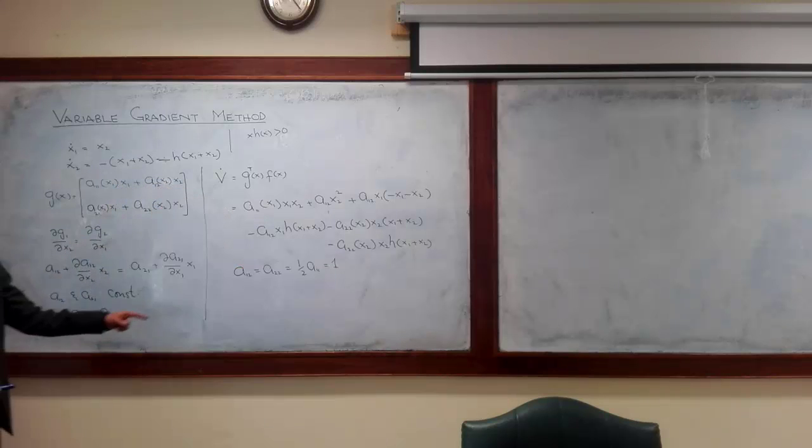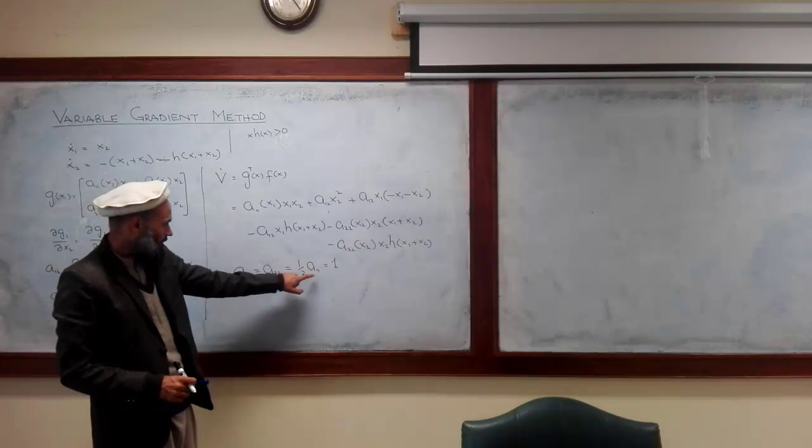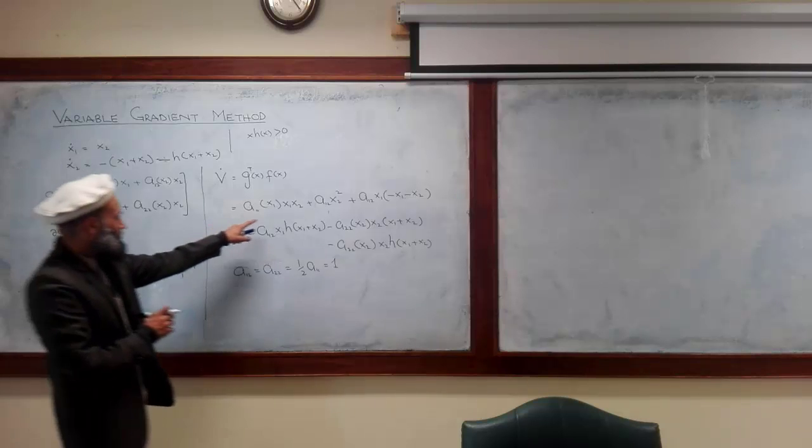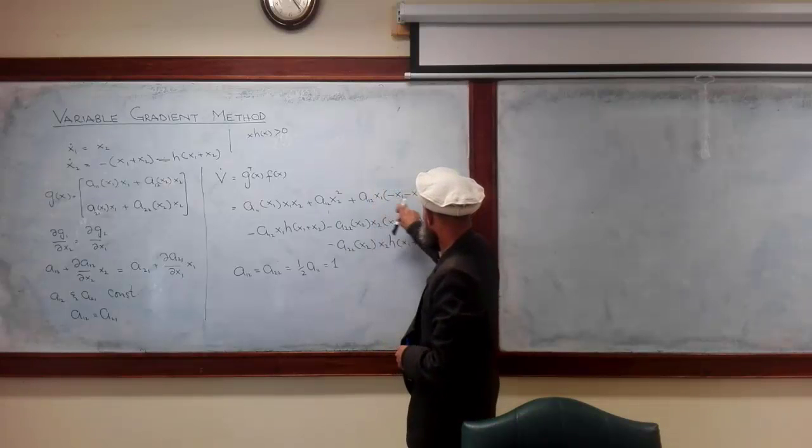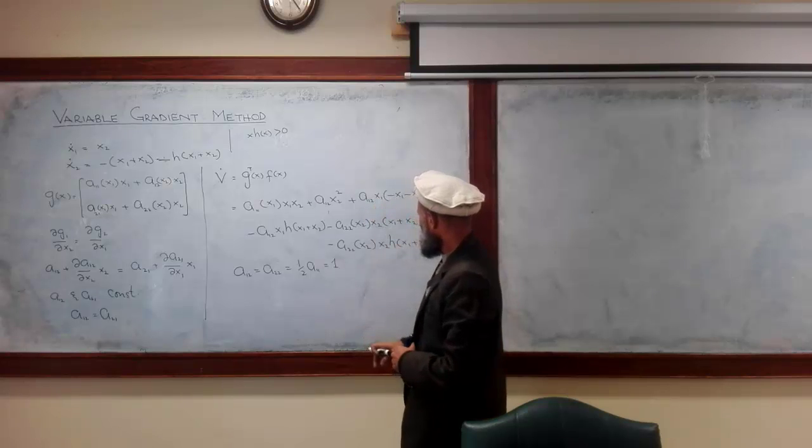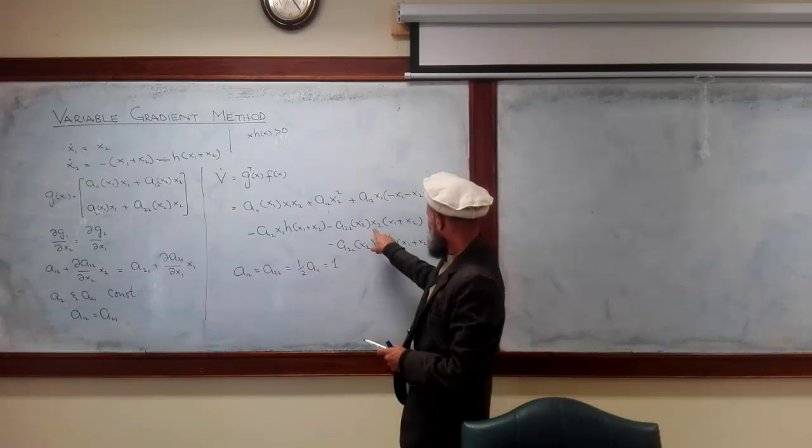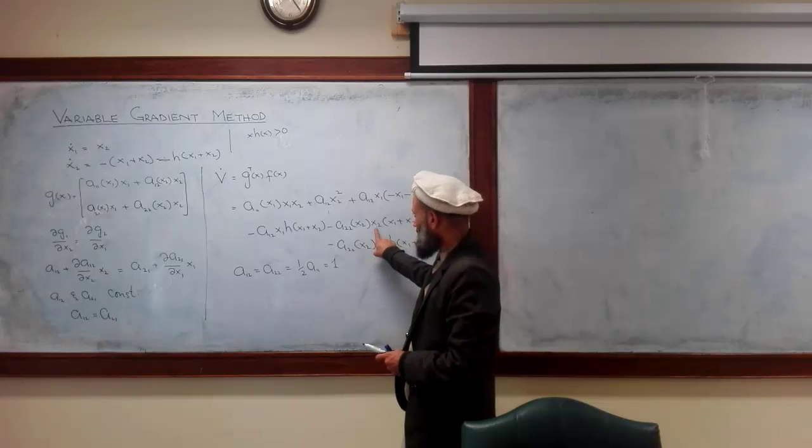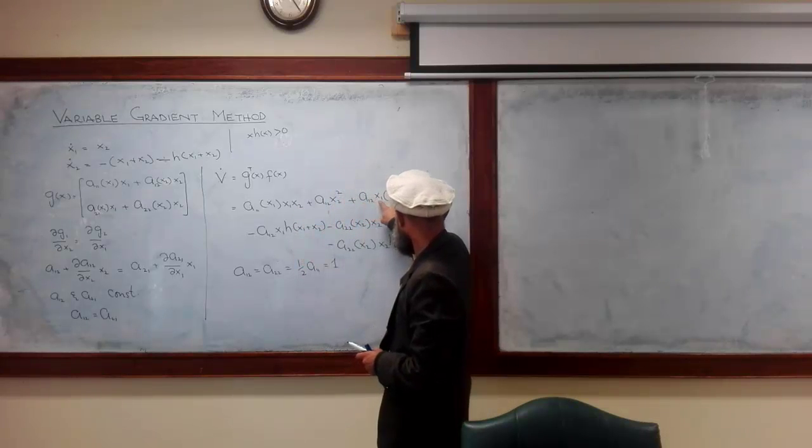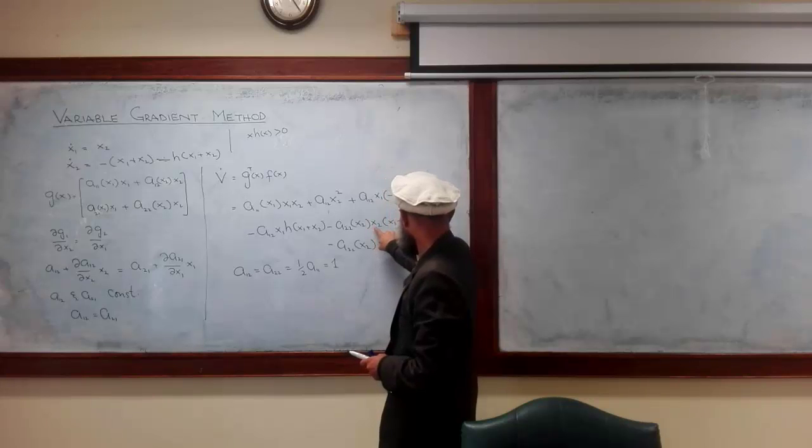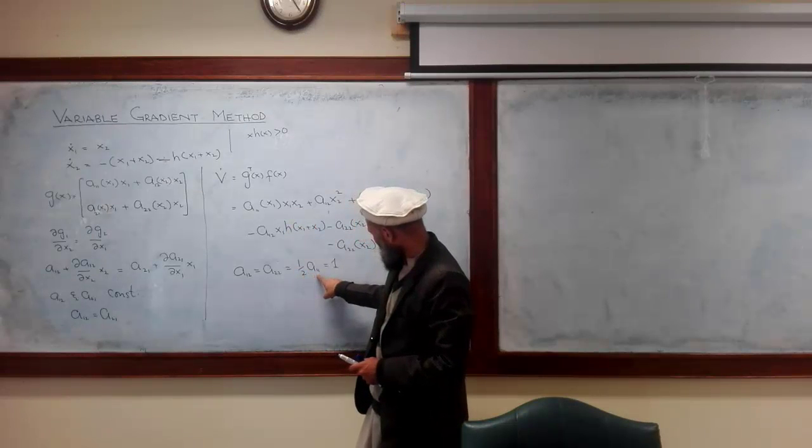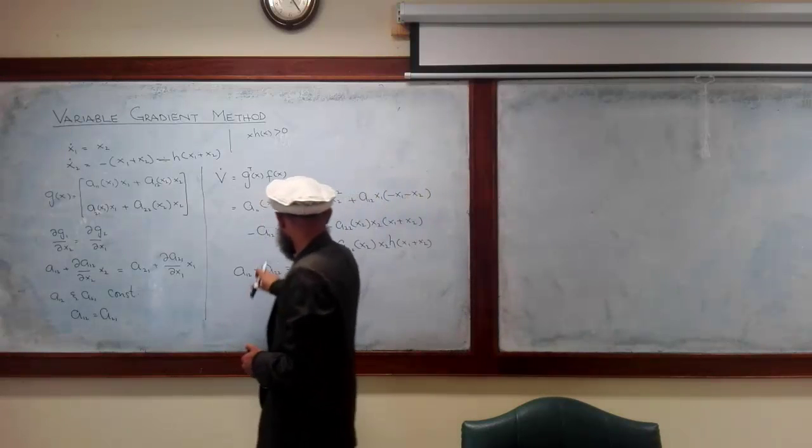We select a12 equal to a22 equal to half a11 x1. Why this selection? This term x1 x2, this term x1 x2 and this term will be cancelled out because we have selected a11 to be twice of these things. So that is the reason for this selection.